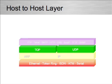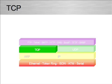Above IP, we have the host-to-host or transport layer. Here we see two protocols: TCP, the Transmission Control Protocol, and UDP, the User Datagram Protocol. These control how data is transported between machines.